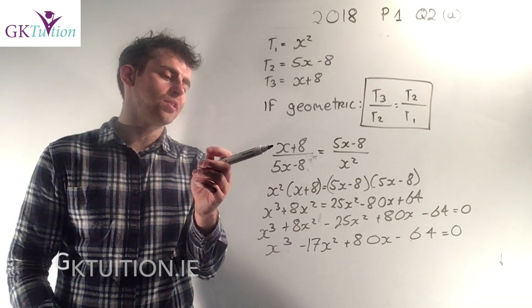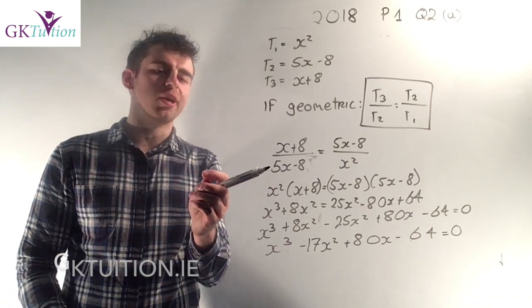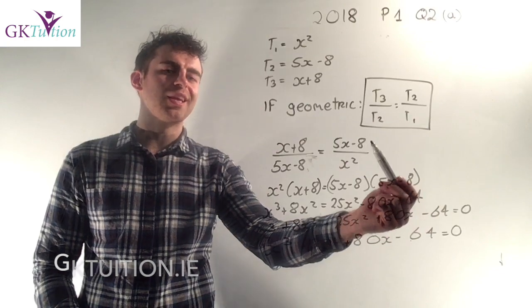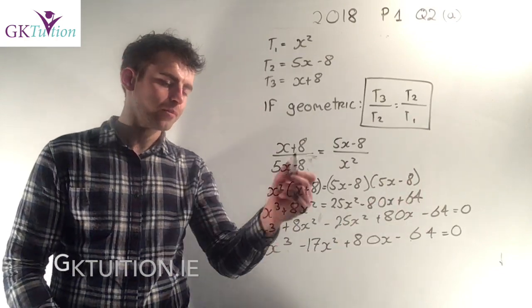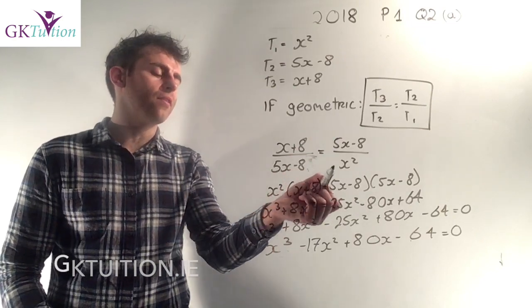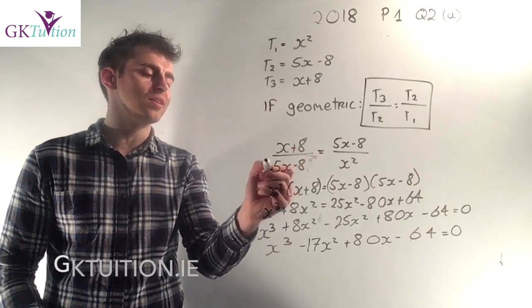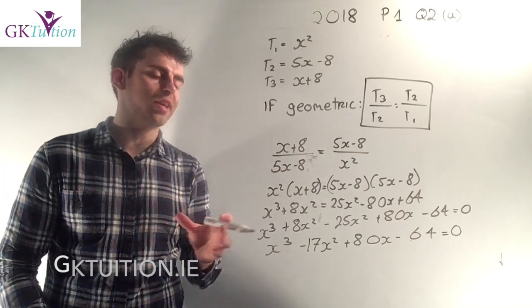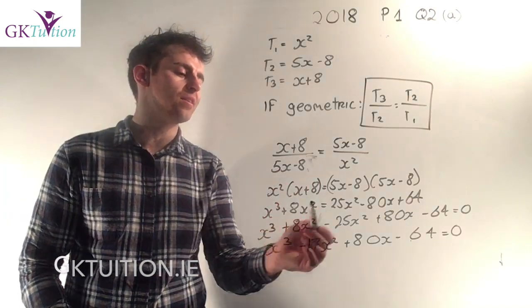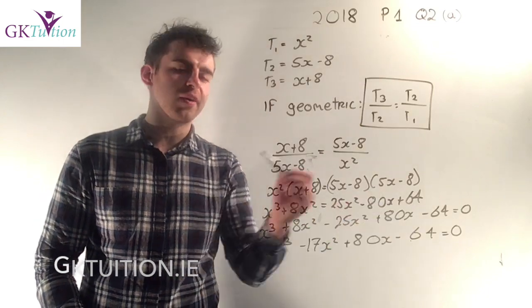t3 in this case is x plus 8, t2 is 5x minus 8. Then the other fraction is t2 is 5x minus 8, t1 is x squared. With two fractions and equals in between them you can cross multiply, or you can think of it as multiplying both sides by x squared and multiplying both sides by 5x minus 8. Either way you end up with x squared times x plus 8 is equal to 5x minus 8 by 5x minus 8.